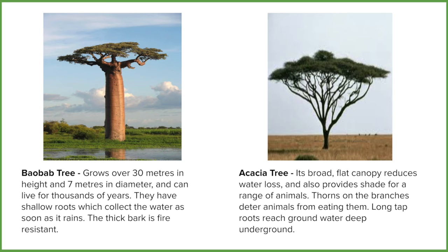The baobab's bark is also particularly thick for two significant reasons. First, it prevents water from being transpired — evaporated out of the tree. Second, when bushfires happen quite a lot during the dry seasons in the Savannah, the thick bark is fire resistant, so the tree is more likely to survive. Finally, it has really shallow but really wide roots. The reason for this is that when the rains come, the tree wants to pick up as much water and nutrients as possible, so keeping the roots closest to the surface gives it the best chance of collecting them.